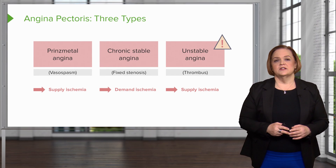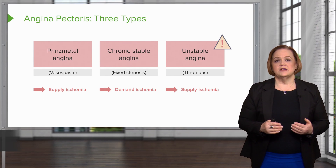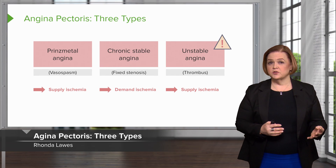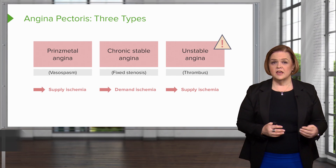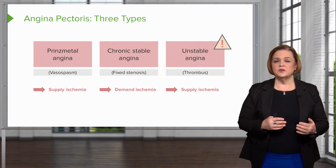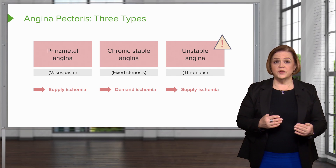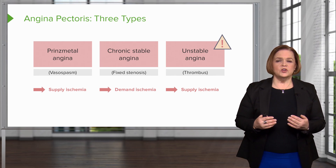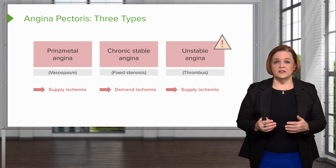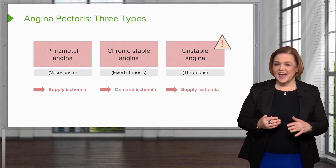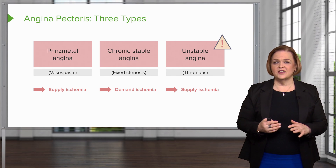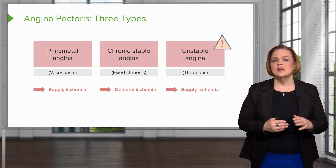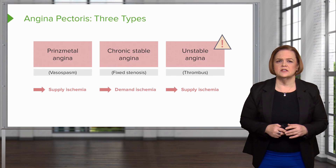With angina pectoris, there are three types. We talked about four different types of drugs to treat chest pain, but now I want you to focus on the concept of three different types of chest pain. They have different causes — they all three hurt, but the causes are different, and that's why we treat them just a little bit differently.